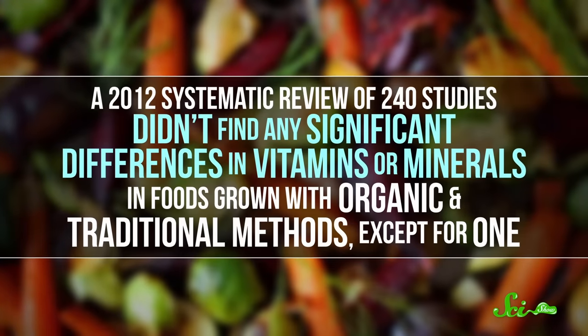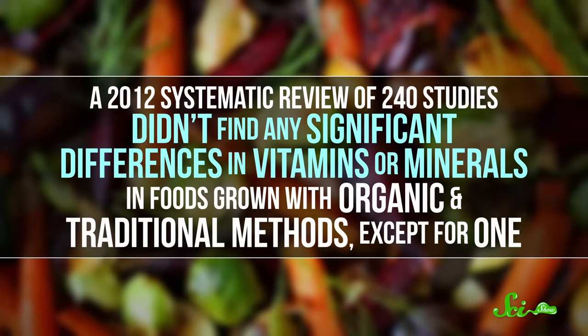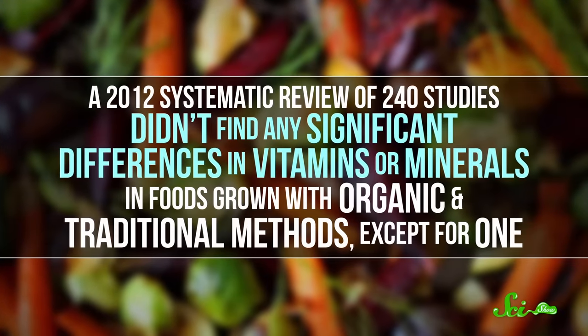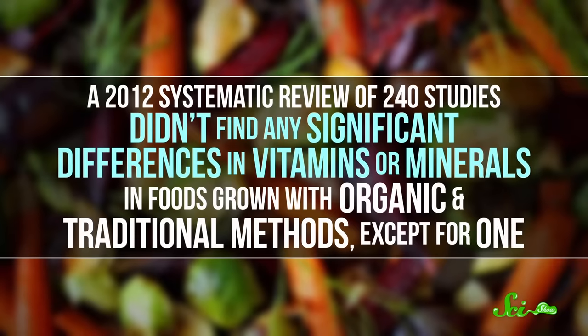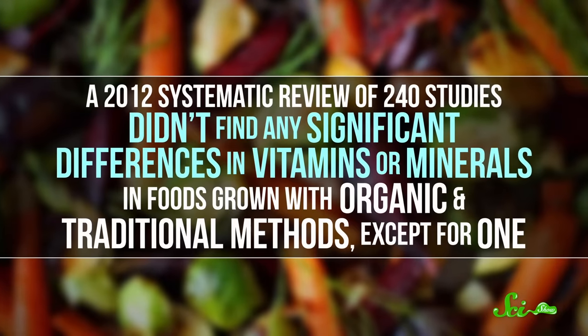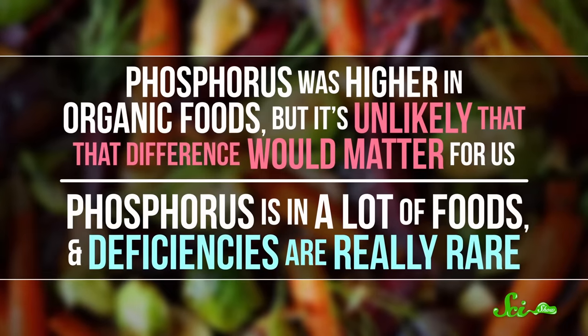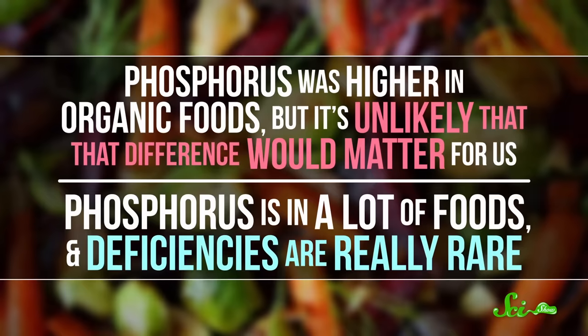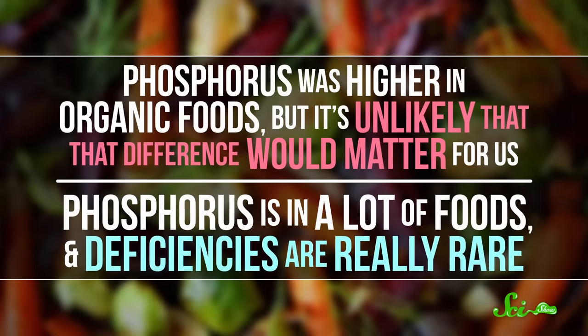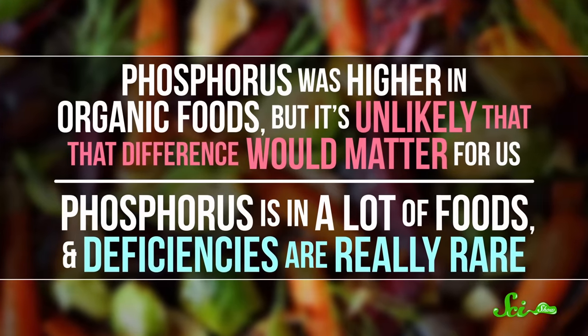A 2012 systematic review of 240 studies, for example, didn't find any significant differences in vitamins or minerals in foods grown with organic and traditional methods, except for one. Phosphorus was higher in organic foods, but it's unlikely that that difference would matter for us anyway. Phosphorus is in a lot of foods, and deficiencies are really rare. So there's no compelling case to be made that organic food is better for you.